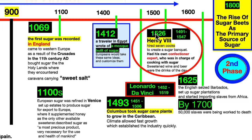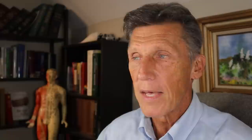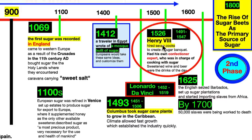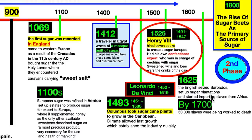Moving into the 1500s and 1600s, we have Henry VIII — who lived from the late 1400s into the 1500s — alongside Leonardo da Vinci and Christopher Columbus, all born around 1451–52. Two of the three definitely had gout; Henry VIII certainly had it for a long time. He was a huge person, hired seven cooks to create sugar banquets on a number of occasions, had his own confectioner, and sweetened wine and beer. Sugar was everything. In 1625 the English seized Barbados, set up sugar plantations, and started importing slaves from Africa. By 1700, 50,000 slaves were being worked to death there.